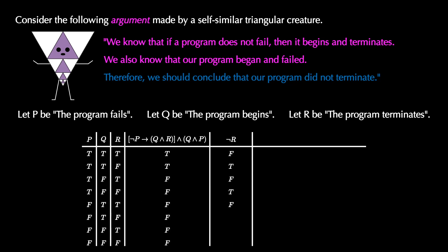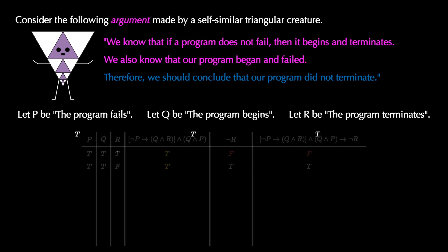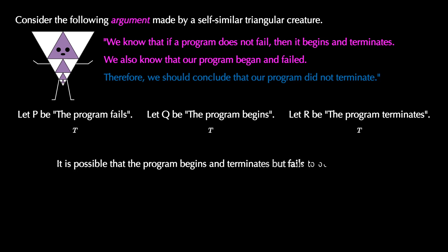The conclusion in the argument is not R — that the program did not terminate — which we fill in by negating the R column. We connect the premises and conclusion with a conditional. Looking carefully at this truth table, it is not a tautology, so we have a problem. Revisiting formal implication, we look at the rows where both premises are true — that's the first two rows. In the first row, the conclusion is false, indicating a place where the argument fails. This happens when P is true, Q is true, and R is true: the program begins and terminates, but fails to do what we want. The existence of this row indicates the argument is not valid.